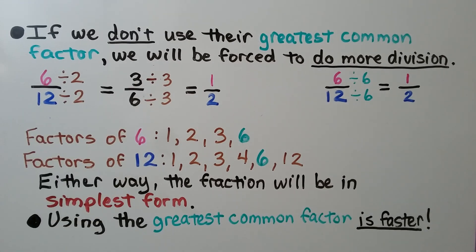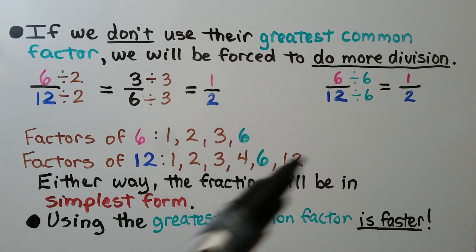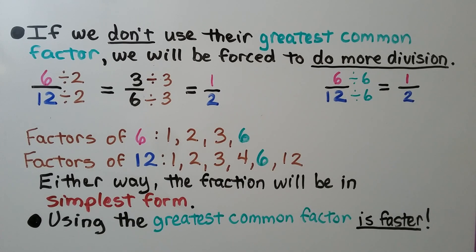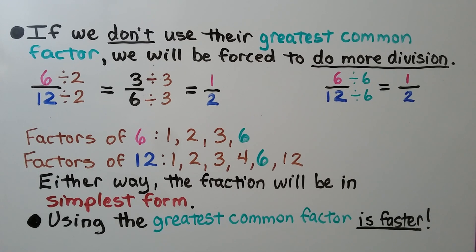We could divide the numerator and denominator both by three. That equals one-half. If we used the greatest common factor, the six, we only need to divide once. Either way, the fraction will be in simplest form, whether we divide two times or one time. But using the greatest common factor is faster, and we use less math.